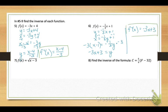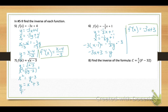Number 7: replace with y, interchange variables x and y, and square both sides to start solving for y. Add the 3 over, so we get y equals x squared plus 3. That is our inverse function.